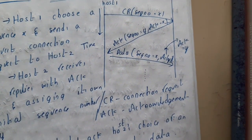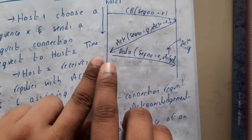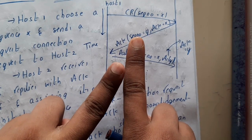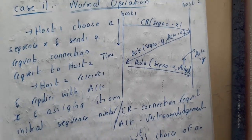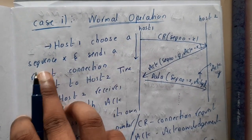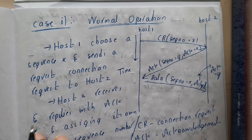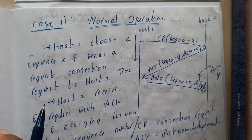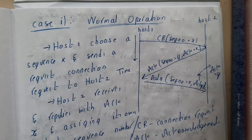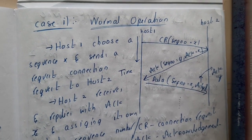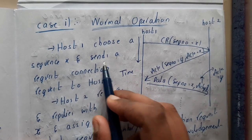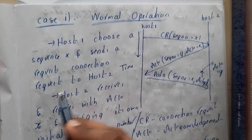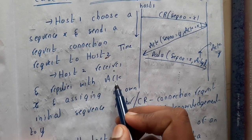So initially you send the request, it sends the acknowledgement, then you start sending data — those are the three steps. In normal operation with no issues, Host 1 chooses a sequence number X and sends a connection request to Host 2. Host 2 receives it and replies with an acknowledgement of X, and assigns its own initial sequence number Y.